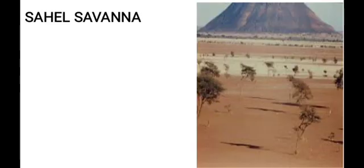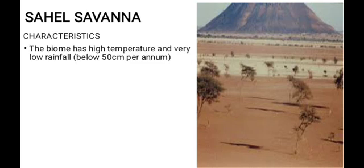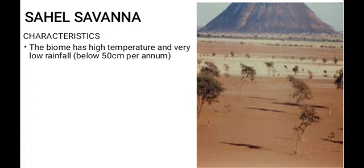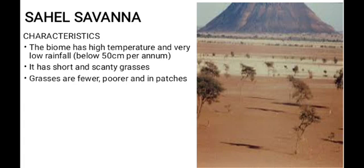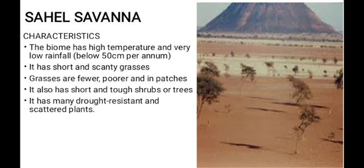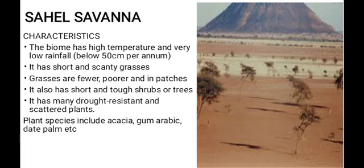The last type of savannah in Nigeria is the Sahel savannah, found up north, very close to the desert. This biome has high temperature and very low rainfall — below 50 centimeters per annum. It has short and scanty grasses that are fewer, poorer, and patchy. It has short and tough shrubs or trees, and many drought-resistant scattered plants. Plant species found here must be able to survive droughts; examples include Acacia gum arabic and date palm.